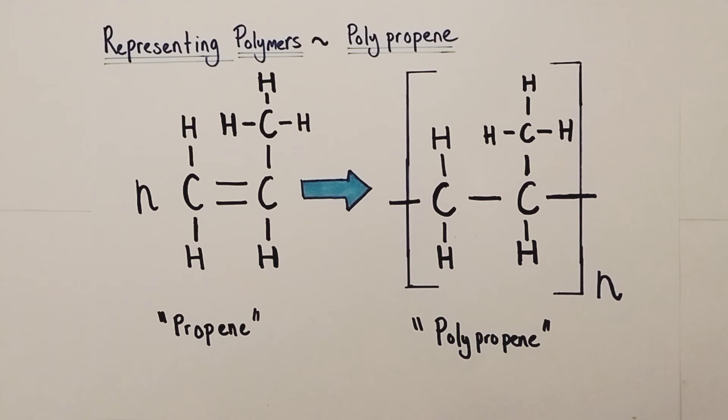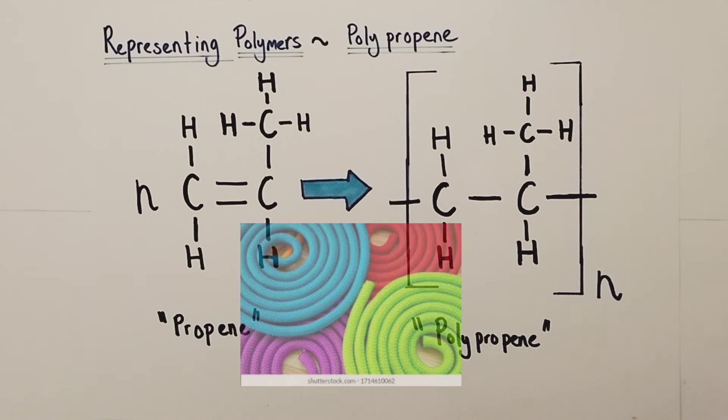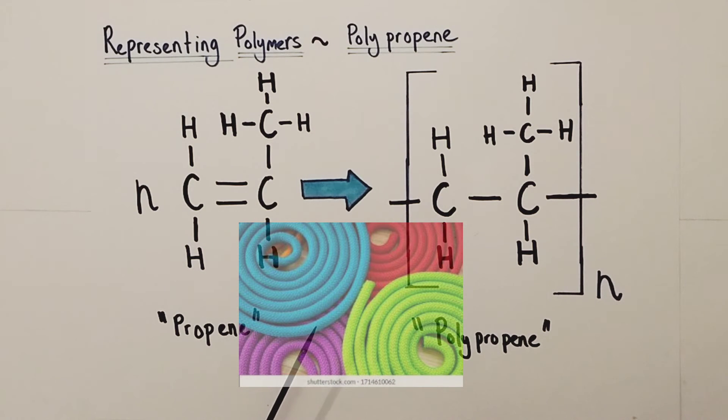Now the uses of polypropene are it's pretty durable, it's used to create rope actually, so it's used to create polymer ropes.